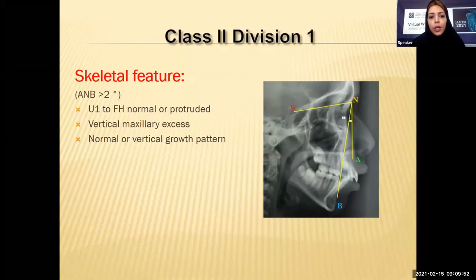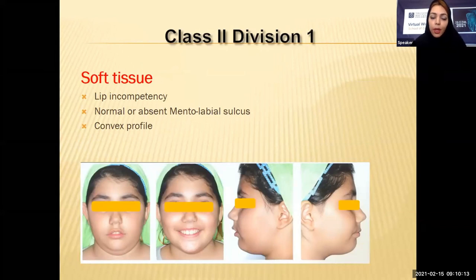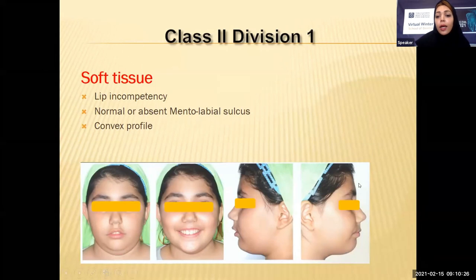In class 2 division 1 patients, the upper incisor to Frankfurt plane angle is normal or slightly more than normal, meaning the inclination of upper incisors is greater than normal. In vertical dimension, we mostly have vertical maxillary excess, and the patient usually has a normal or vertical growth pattern. In soft tissue, these patients usually have lip incompetency because the jaws are not in a normal relationship, so the lips cannot easily touch together. The mental labial sulcus may be normal or absent, and the patient has a convex profile.